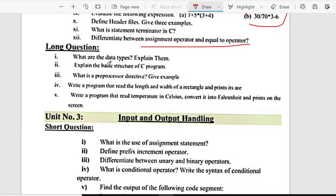Long questions second chapter: what are data types? Explain them. Second is, explain the basic structure of C program. Third is, what is pre-processed directives, give example. Fourth is, write a program that reads the length and width of a rectangle and print its area. Fifth is, write a program that reads temperature in Celsius, convert into Fahrenheit and print on the screen.